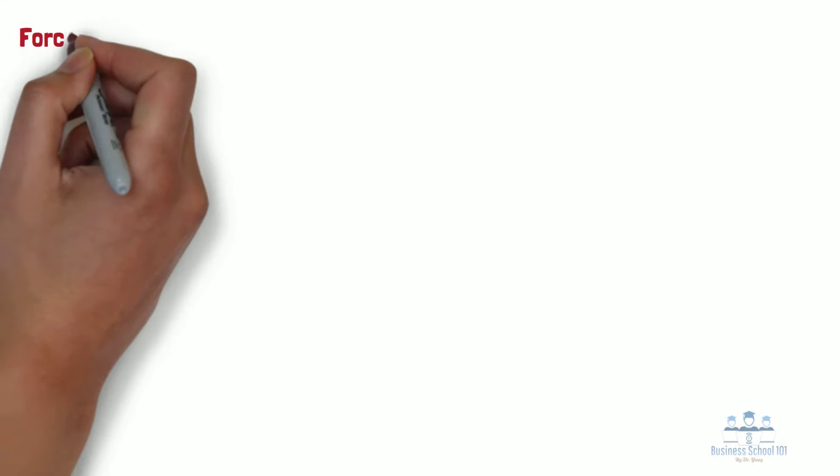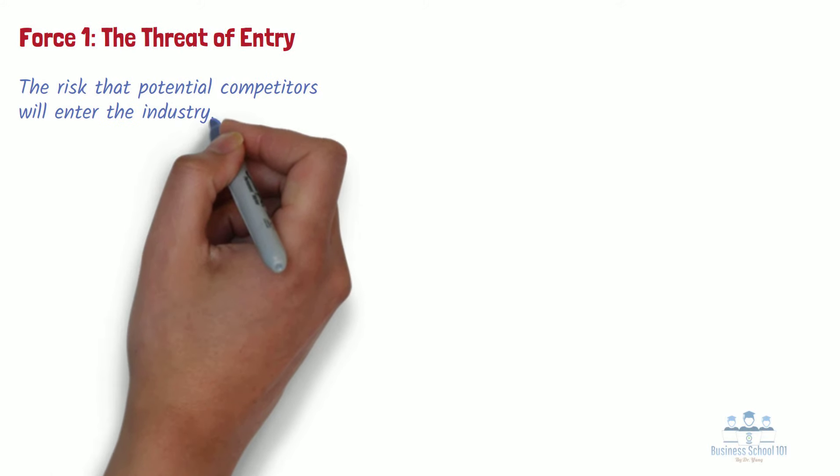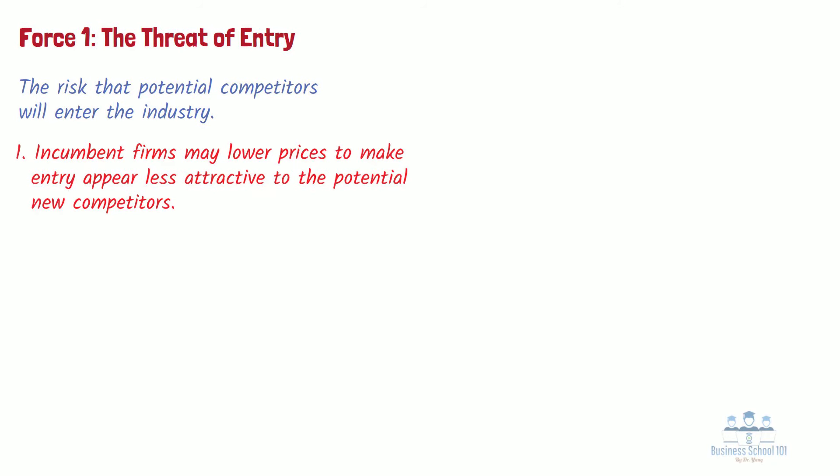Force number one: the threat of entry. The threat of entry describes the risk that potential competitors will enter the industry. Potential new entry depresses industry profit potential in two major ways. First, with the threat of additional capacity coming into an industry, incumbent firms may lower prices to make entry appear less attractive to the potential new competitors, which would in turn reduce the overall industry's profit potential, especially in industries with slow or no overall growth in demand.